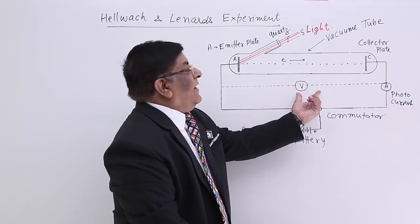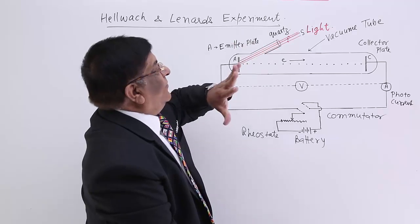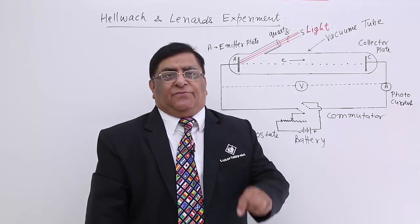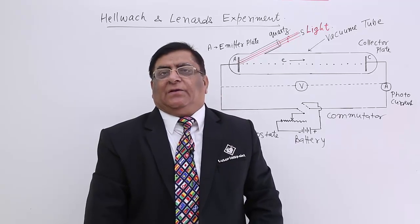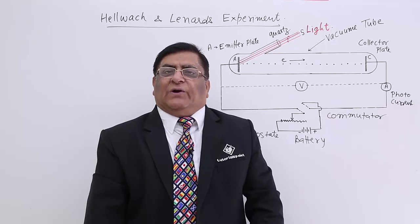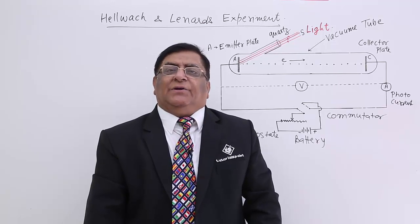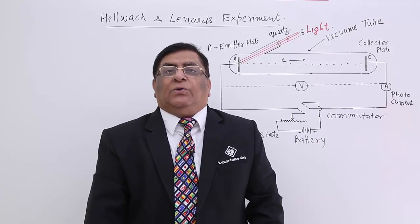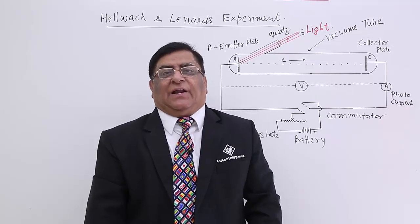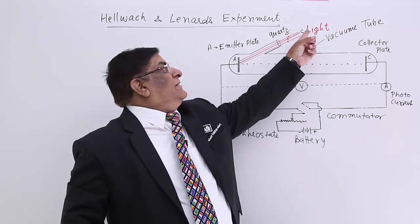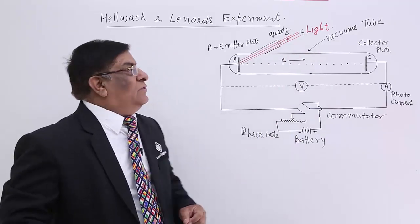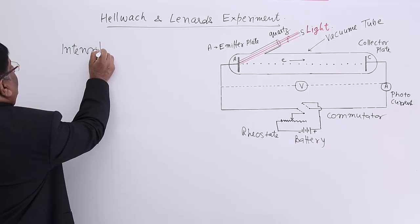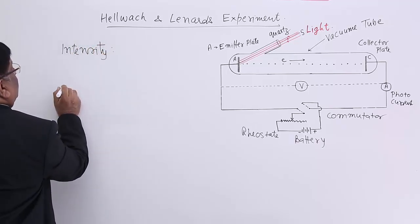This is the potential difference across the two, which is required in our experiment. Now we are ready for the experiment. For this experiment, we have to understand a few technical terms of light. Number one: what is intensity of light? And number two: what is frequency of light? How can we change intensity of light, and how can we change frequency of the light coming from here?